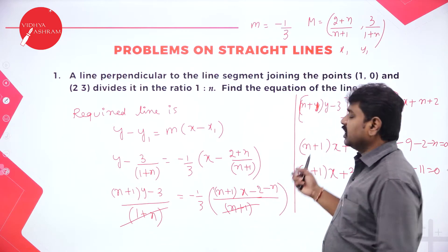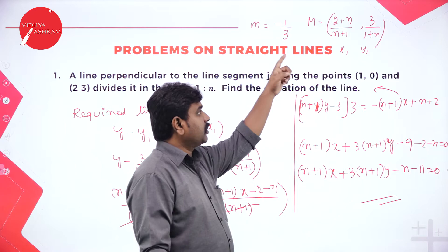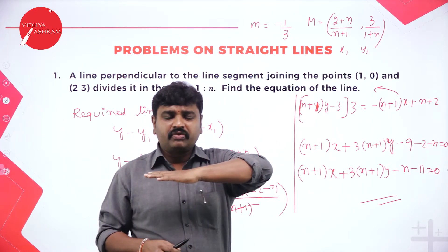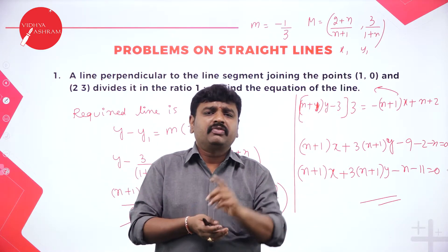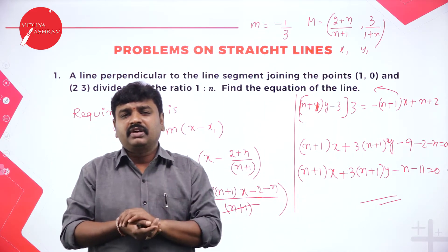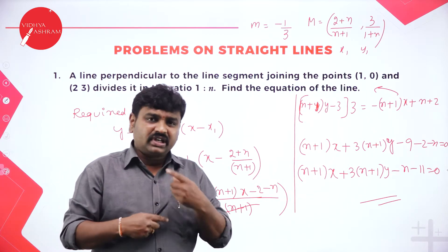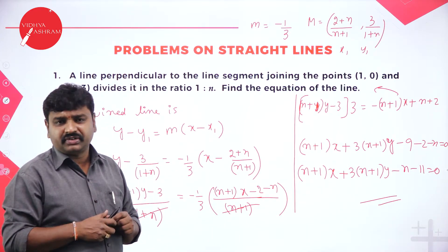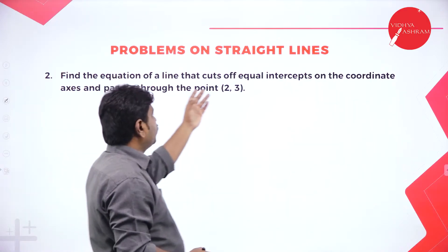So to summarize: they gave slope of line AB via the joining points. Find slope of AB using Y2 minus Y1 by X2 minus X1. Then find slope of the required line because they are perpendicular — M2 is minus 1 by M1. After that, use the section formula to get the point of division, then apply point slope form to find the equation of line.